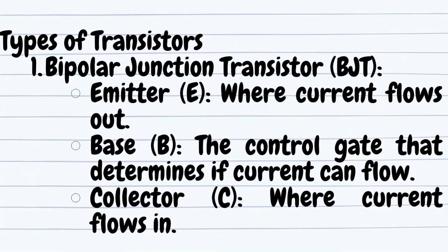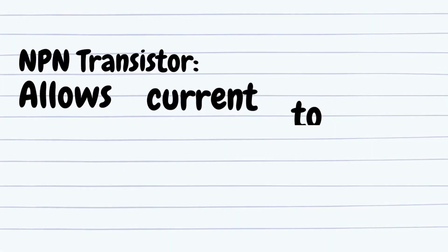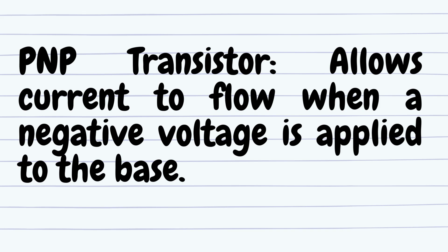Types of transistors. Bipolar Junction Transistor (BJT) — this is the classic type with three parts: Emitter (E), where current flows out; Base (B), the control gate that determines if current can flow; and Collector (C), where current flows in. BJTs come in two types: NPN transistor, which allows current to flow when a positive voltage is applied to the base; and PNP transistor, which allows current to flow when a negative voltage is applied to the base.